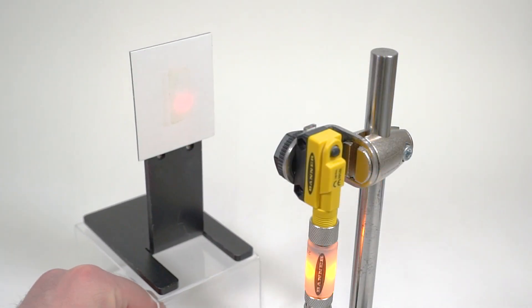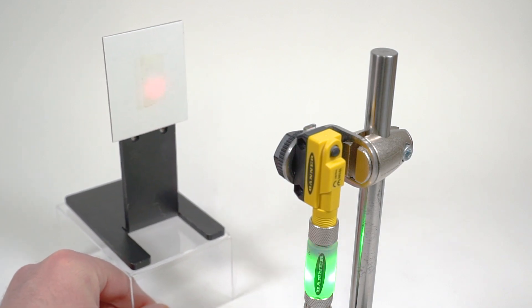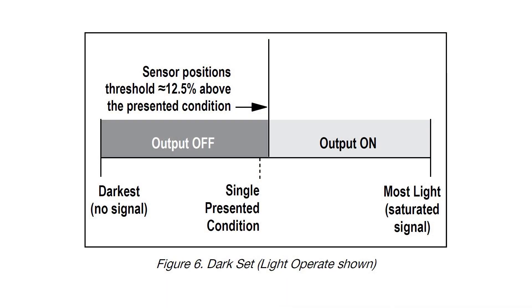The dark set mode works in the opposite way. It measures the light returning to the receiver and sets the switching threshold 12.5% above the taught condition.